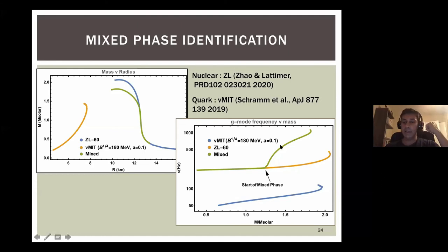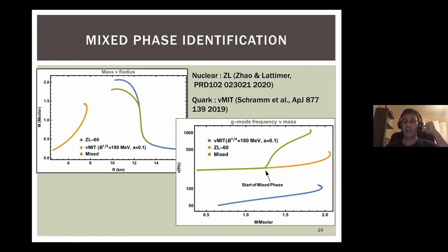The main message is that even if the mass-radius curve doesn't show a huge difference — making it hard to pin down the phase transition — the g-mode shows a drastic jump. Because the phase transition changes the sound speed difference and that translates into the g-mode frequency, you see a jump right when the mixed phase enters. What makes the g-mode different from the f-mode is that the g-mode frequency in the mixed phase is actually higher than both the neutron star and pure quark phase values — whereas the f-mode interpolates between them. So if you see a high-frequency g-mode, it's definitely a sign of a mixed phase.